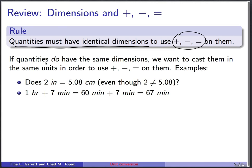Now if quantities do have the same dimensions, we want to typically cast those quantities in the same units. So just to make this concrete, we could ask the question: does 2 inches equal 5.08 centimeters? And that is a dimensionally legal question because inches and centimeters are both lengths. They both have dimensions of length.